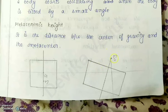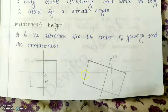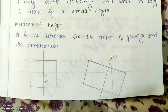The metacentric point determines whether a body is stable or not. The metacentric height is the distance between the center of gravity and the metacenter. GM decides whether this particular body will be stable or not.